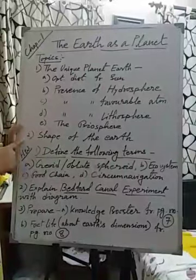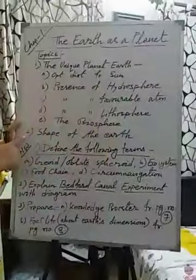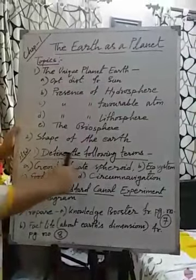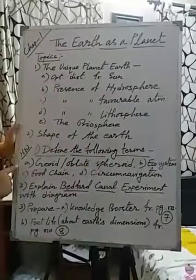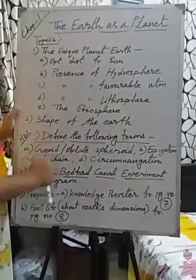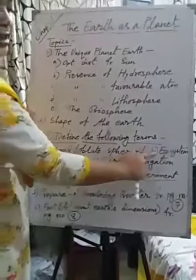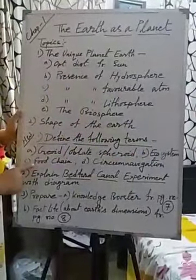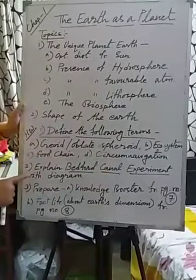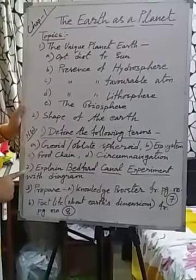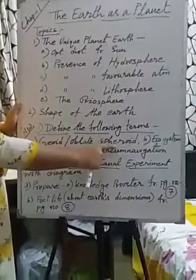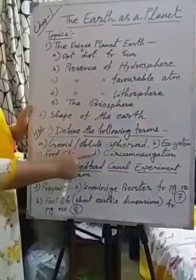Our second topic from this chapter is the shape of the Earth, which I will also explain. And then these are your homework, which you have to write in your copy. I will definitely check. The first homework question: oblate spheroid. Second: ecosystem. Third: food chain. Number four: circumnavigation. These four words are completely new for you, but I will explain them today before you do the homework.